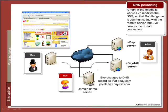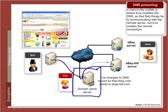Another example attack is DNS poisoning. Eve poisons the DNS server so that instead of communicating with Alice — for example, the eBay server — the communication actually happens with another server controlled by Eve.